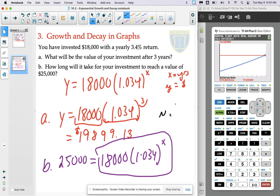And we see that our intersection is at the point 9.82. So we know that it will take about 9.82 years for us to reach $25,000. That's the first strategy that you can use.